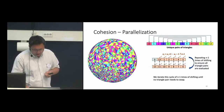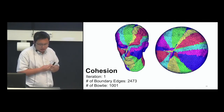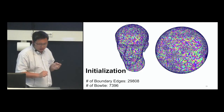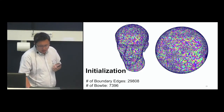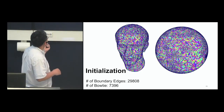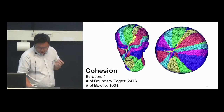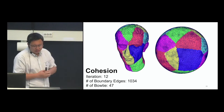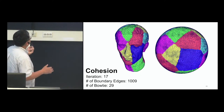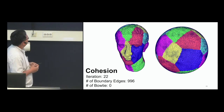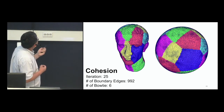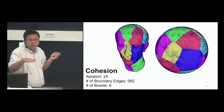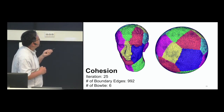Here is a video clip showing the coherent process. Initialization is very random. We recorded the number of boundary edges and bow ties during the process. The first few iterations cohere the triangles very fast — just one or two iterations and they form some rough shape. Then over subsequent iterations the number of boundary edges and bow ties is reduced. We run a total of 25 iterations, after which the result stabilizes. There are still some issues — still almost a thousand boundary edges remaining.